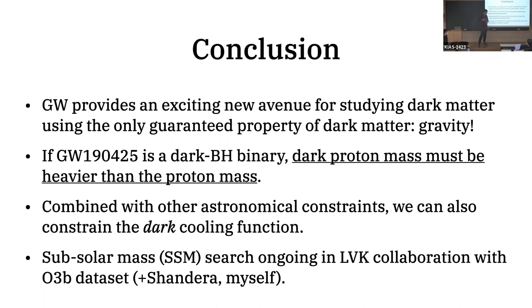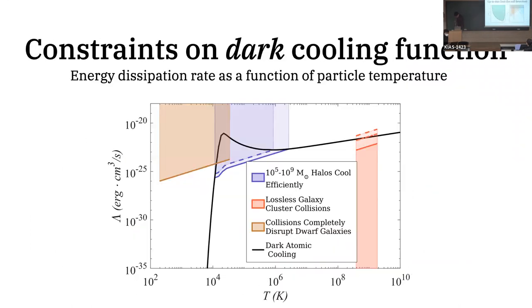Other than the gravitational impact, we don't have a way to detect dark photons directly — which is very ironic. But it can affect things like the existence of dark galaxies. The cooling rate is also related to the interaction rate, so you can think of atomic dark matter as self-interacting dark matter. The self-interaction comes primarily from the dark matter interaction processes that must exist if you have atomic dark matter bound by a dark electromagnetic force.